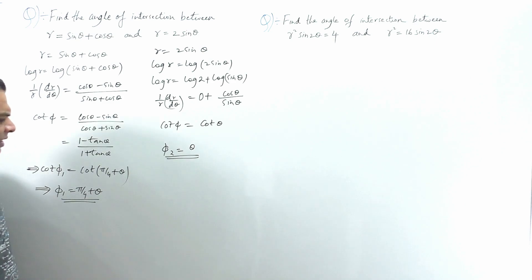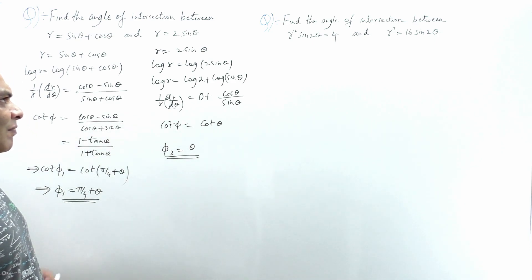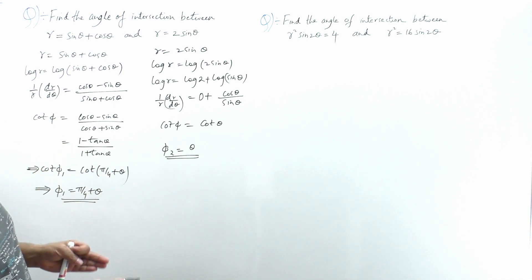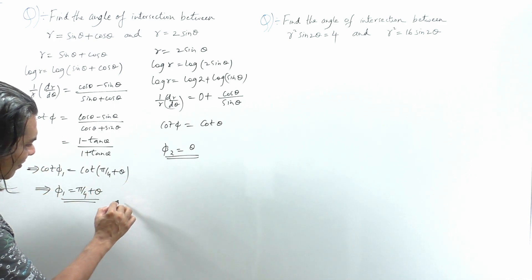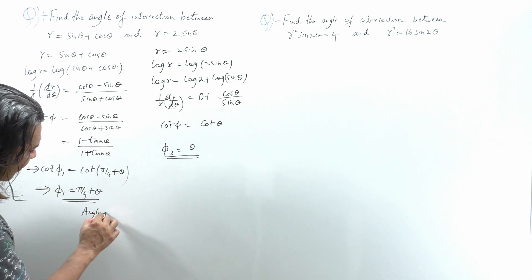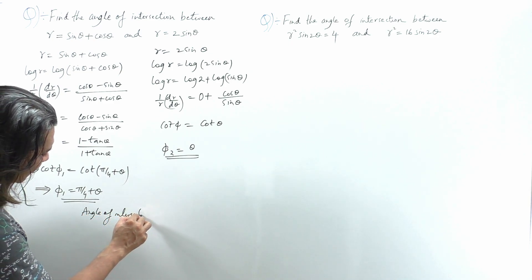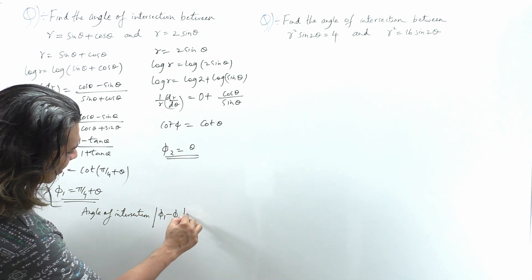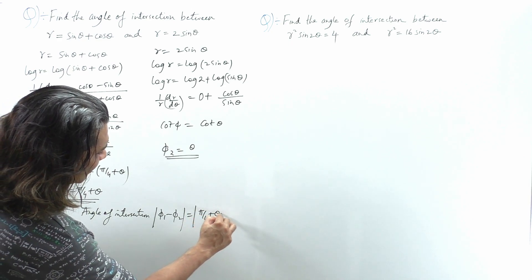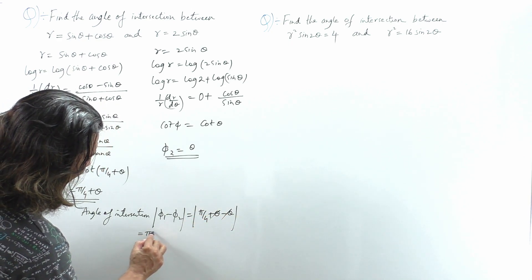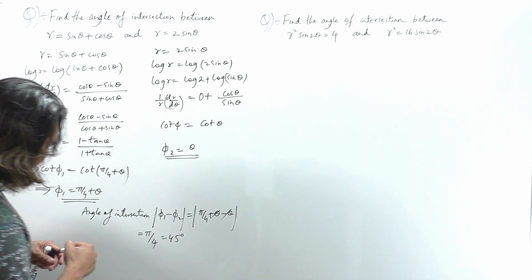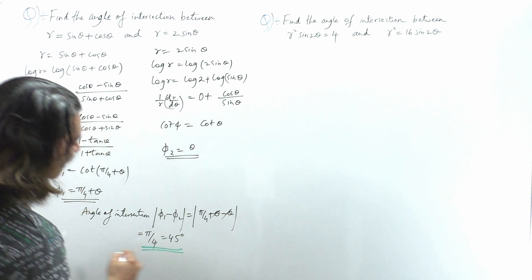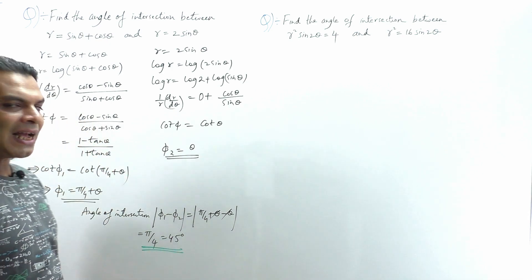So φ₁ = π/4 + θ and φ₂ = θ. The angle of intersection is given by |φ₁ − φ₂| = |π/4 + θ − θ|. The θ terms cancel, giving π/4, which is 45 degrees. So the angle of intersection between these two curves is 45 degrees. That's it — as simple as that.